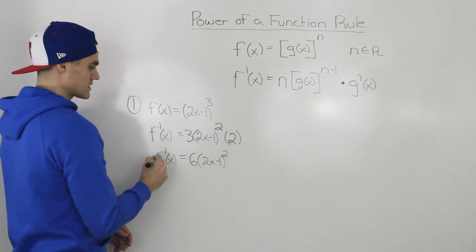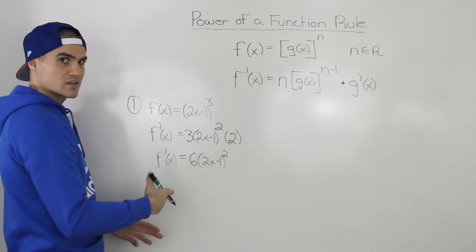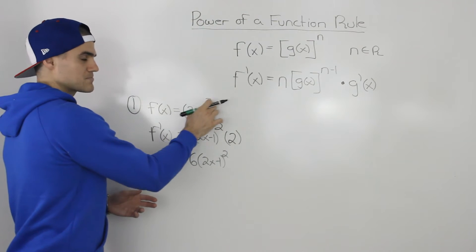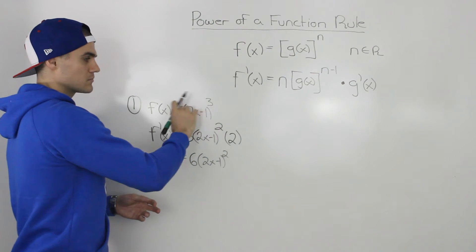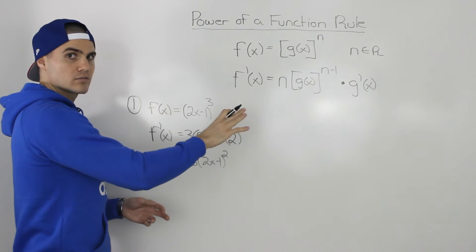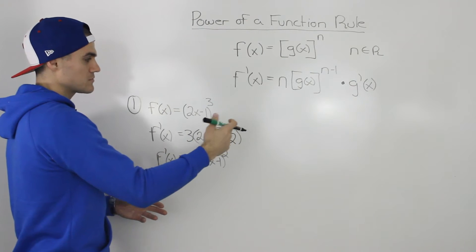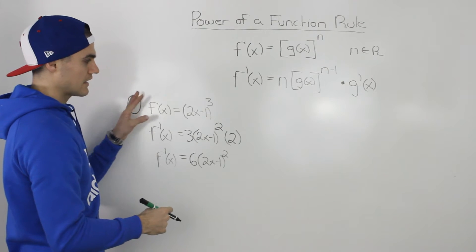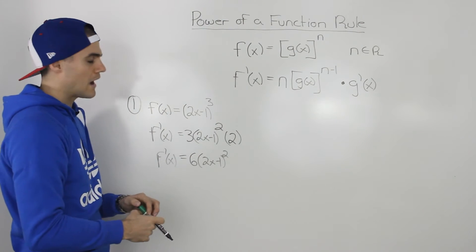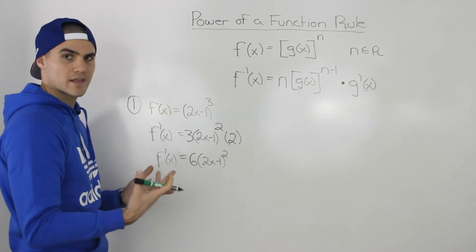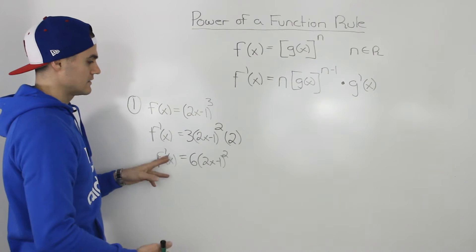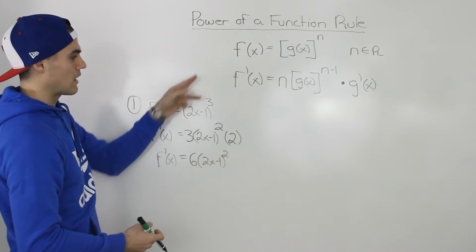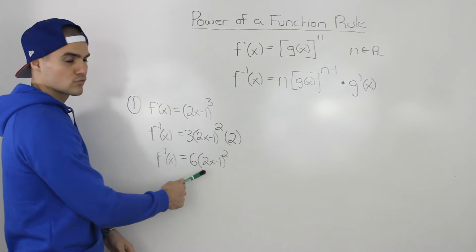Notice how getting the derivative this way was a lot better than if we expanded (2x - 1) multiplied by itself 3 times. That's a lot of expanding and foiling to do, and then we'd have to apply the power rule on each of those terms — that's going to take a lot of time. In this case it's a lot quicker; you can just apply the power of a function rule and get the derivative really quickly.